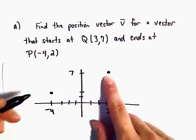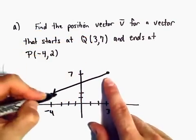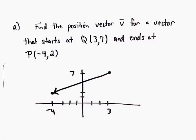It starts at 3,7 and goes to the point negative 4, 2. So this is what our vector would look like if we were to draw it.